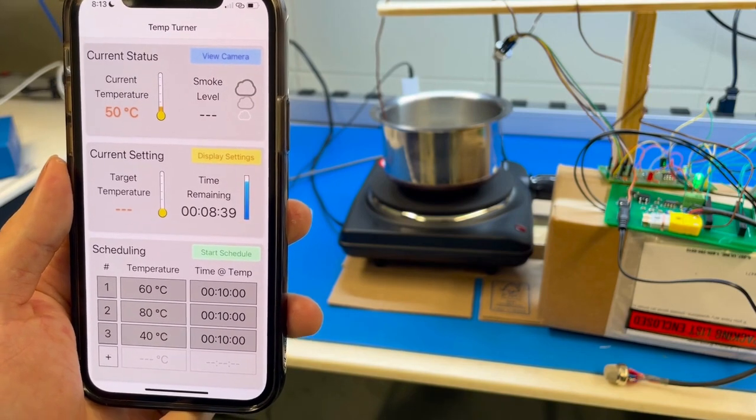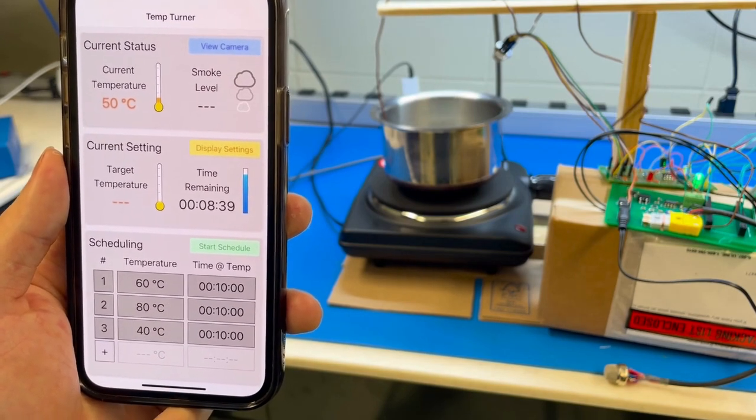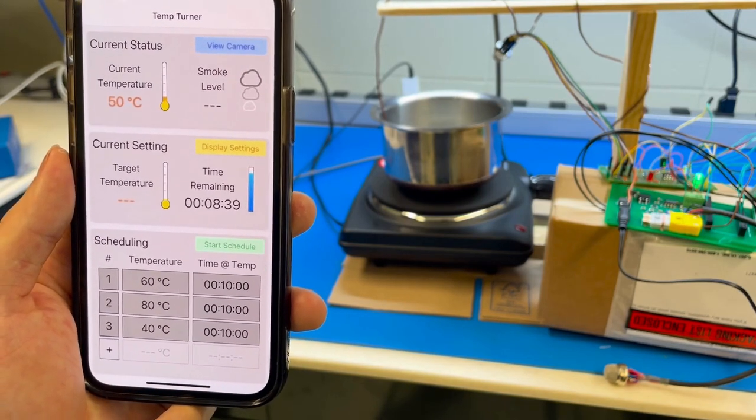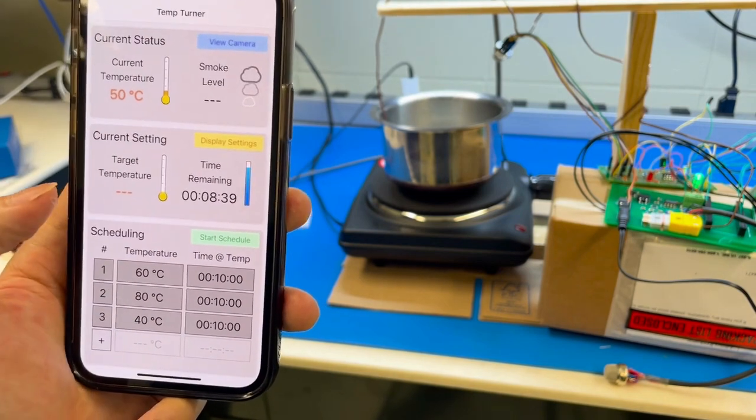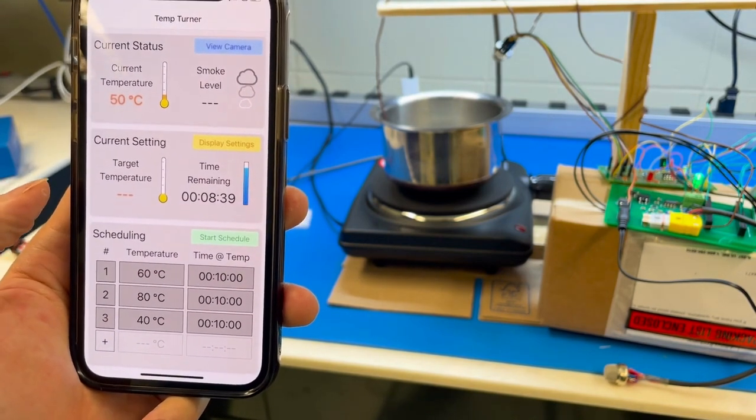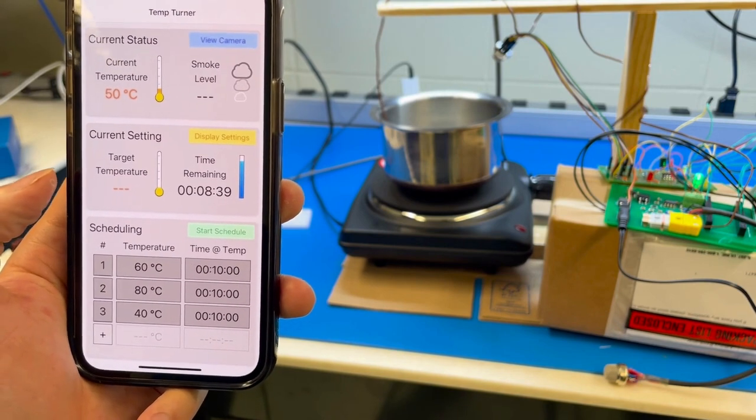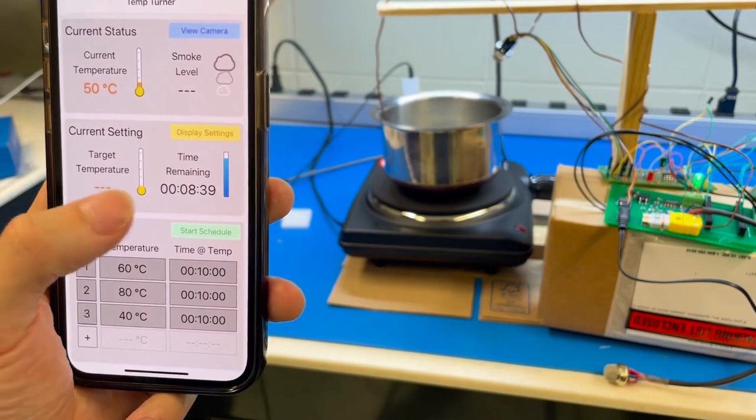The red LED is also not visible on the app since there's no smoke. We will now start the scheduler, which will raise the temperature to 60 degrees and 80 degrees and later bring the temperature down to 40 degrees. Let's wait and see how the system responds to these values.